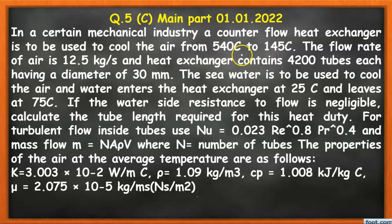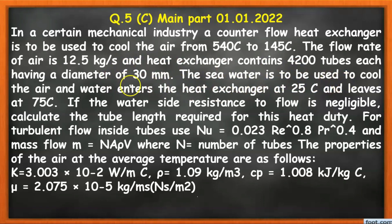In a certain mechanical industry, a counterflow heat exchanger is to be used to cool air from 540°C to 145°C. The flow rate of air is 12.5 kg/s and the heat exchanger contains 4200 tubes, each having a diameter of 30 mm. Sea water is used to cool the air, entering the heat exchanger at 25°C.